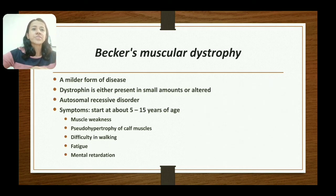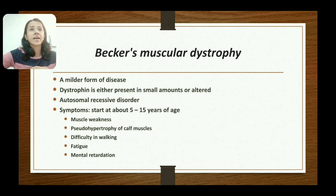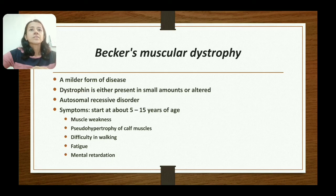The next variety is Becker's muscular dystrophy, which is a mild form of the disease in which dystrophin is either present in small amounts or is altered. This is also an X-linked recessive disorder. Symptoms start at about 5 to 15 years of age, including muscle weakness, pseudohypertrophy of the calf muscle, difficulty in walking, fatigue, and mental retardation.